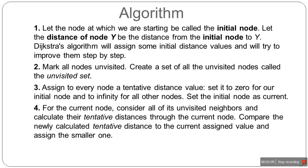Now let's look at the algorithm. Step one: let the node at which we start be called the initial node, and let the distance of node Y be the distance from the initial node to Y. We assign some initial distance values and try to improve them step by step. Step two: mark all nodes as unvisited and create a set of all unvisited nodes called the unvisited set. Step three: assign every node a tentative distance value — set it to zero for the initial node and infinity for all other nodes.